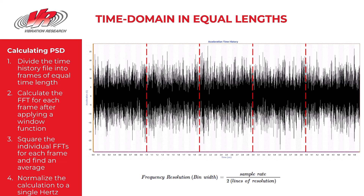The other three steps are these. Second, calculate the FFT for each frame after applying an appropriate window function. Third, square the individual FFTs for each frame and find an average. And four, normalize the calculation to a single hertz — take that average from step three and divide by the frequency to get a normalized value.